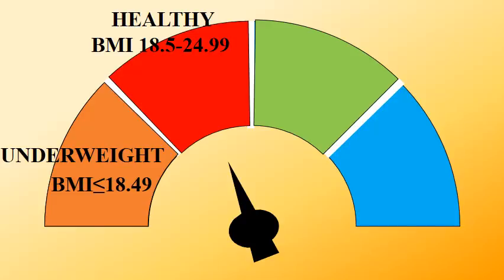If body mass index is between 18.5 and 24.99, it means the person has a normal weight.